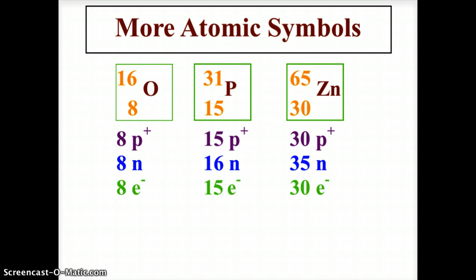So here we have three more examples. We have 16 O 8, 16 being the atomic mass, 8 being the atomic number, O is the symbol for oxygen. So the 8 being the atomic number tells us we have 8 protons. The mass is 16, so 16 minus 8 tells us we have 8 neutrons. And because these are neutral atoms, protons equal electrons, therefore we have 8 electrons.